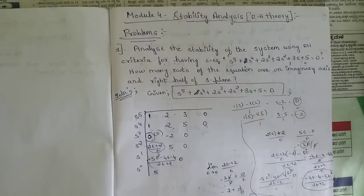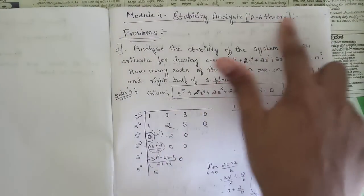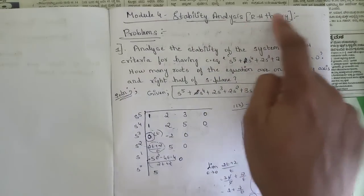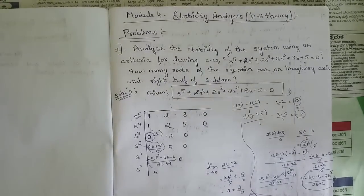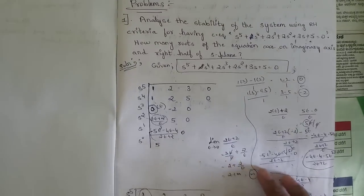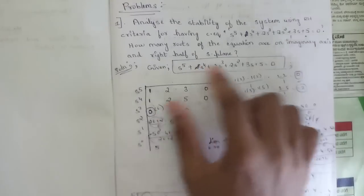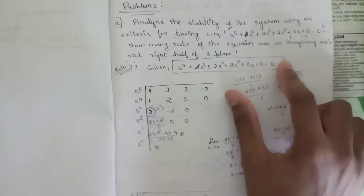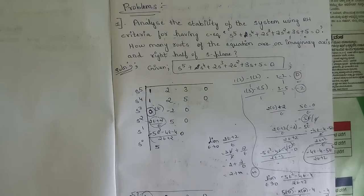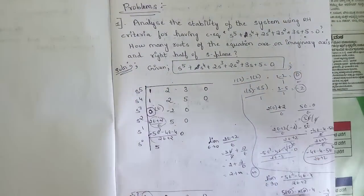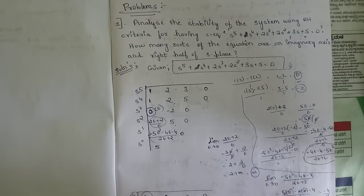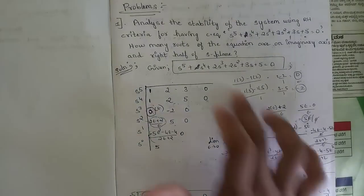From Module 4, the topic is Stability Analysis. We have discussed stability analysis using the Routh-Hurwitz criterion. The Routh-Hurwitz criterion states that the characteristic equation should be written from highest power to lowest power in sequence, where no degree is skipped. For this characteristic equation, we can represent it using one simple Routh array.